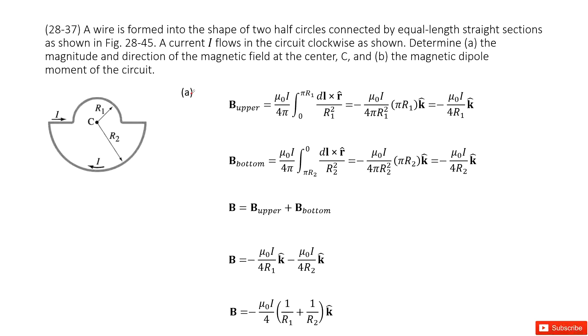We can see we have this wire in this shape, right? First one, we need to find magnetic field in the center C. So we can see the current flows clockwise. And this straight line and this straight line goes through the center C. So they will not produce the magnetic field on point C, right?